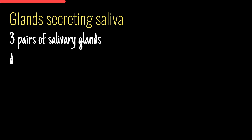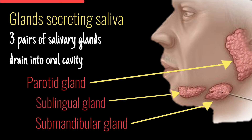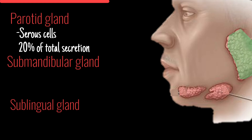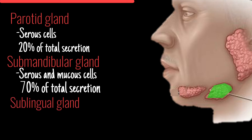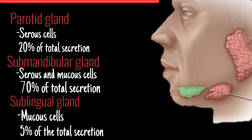Saliva is produced by three pairs of salivary glands that drain into the oral cavity. They are the parotid gland, submandibular gland, and sublingual gland. The parotid gland is composed of serous cells which contribute to 20% of the secretion. The submandibular gland is composed of both serous and mucous cells which contribute to 70% of the secretion. The sublingual gland is composed of mucous cells which contribute to 5% of the secretion.